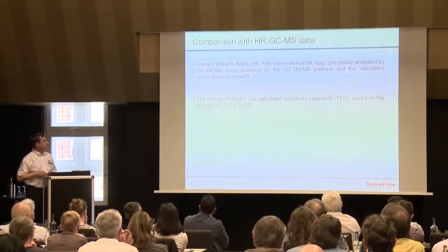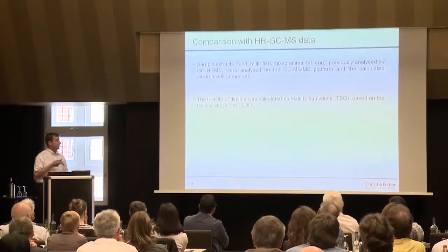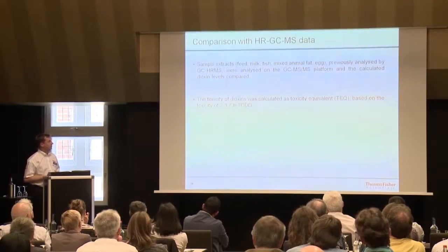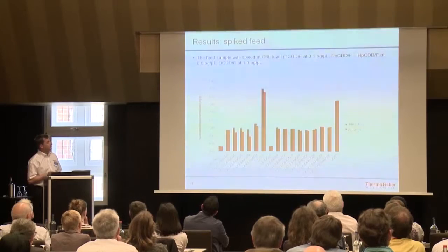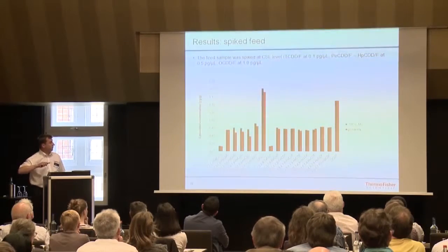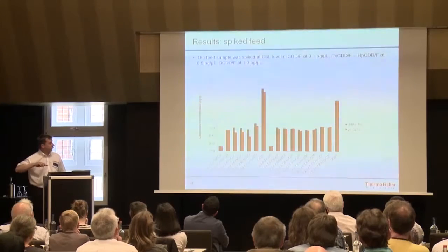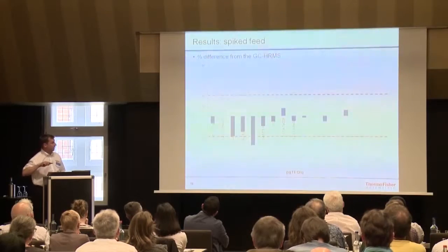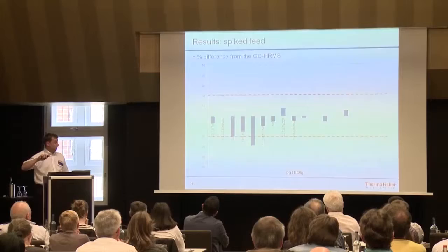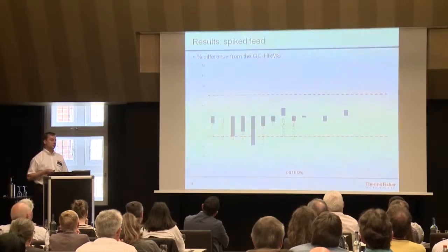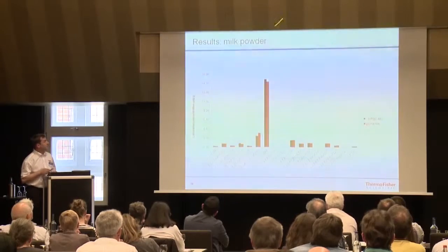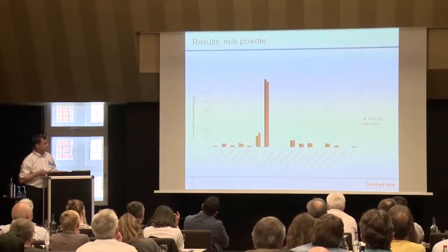For routine use, we tested the performance of our GC-MS/MS against the high-resolution sector instruments using samples kindly provided by Alex and Esteban. What you see here is a spiked feed sample — in red is the GC-MS/MS result, concentration in picograms per gram, and the high-resolution data alongside. On a congener basis, we are almost for all compounds within 20%. Another example for milk powder shows very good agreement between the two systems.